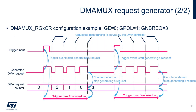On a trigger event, a programmed number of DMA requests (GNBREQ plus one) is generated. There may be a trigger overflow if two trigger events occur before GNBREQ plus one requests and data transfers are completed.